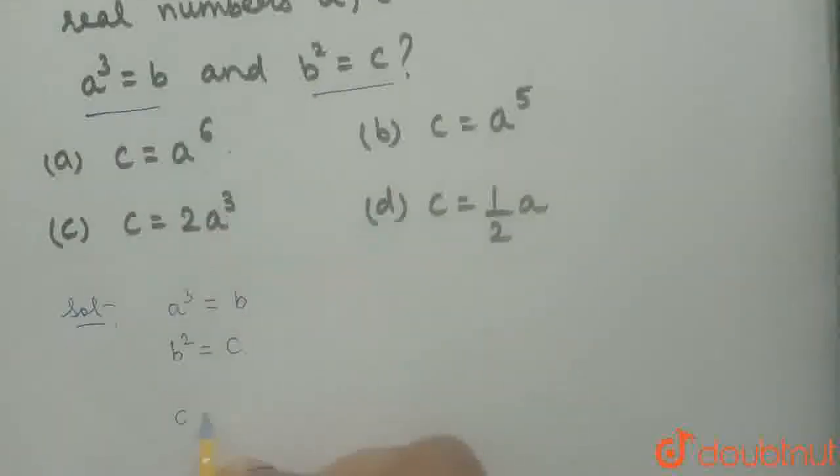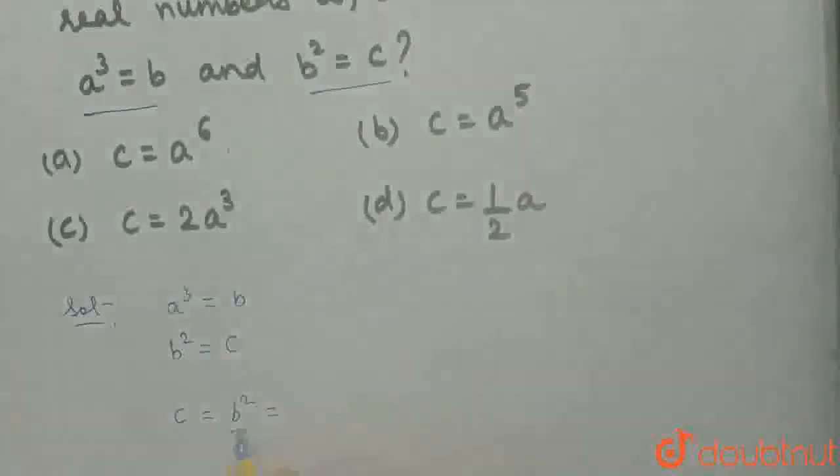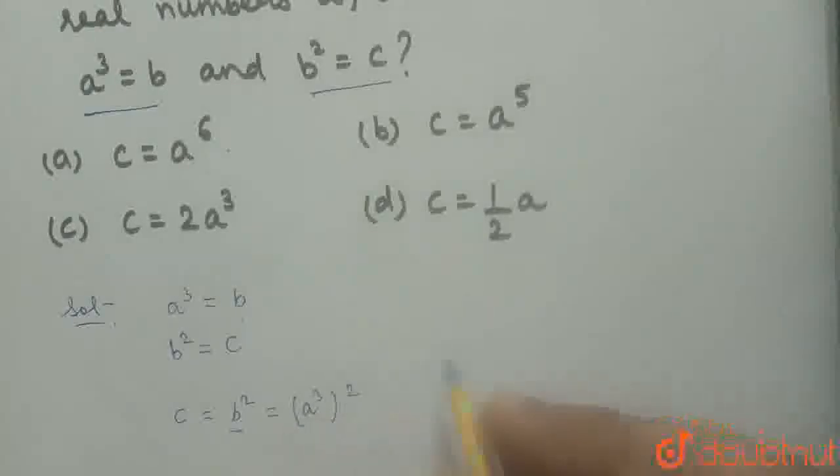C equals B², and B equals A³. So we can write C as (A³)². By the laws of exponents,